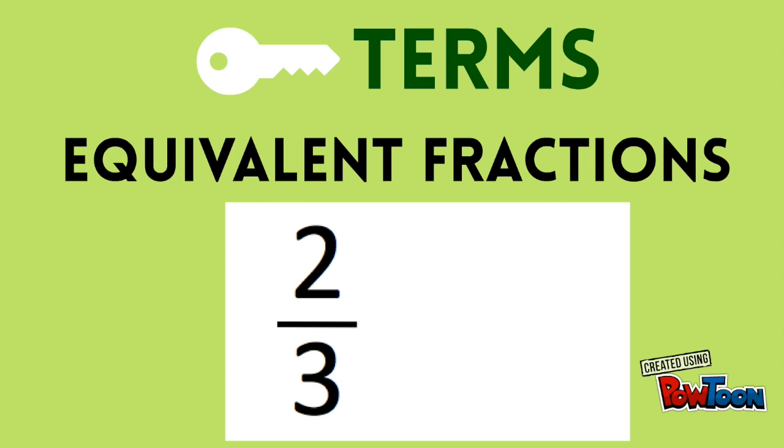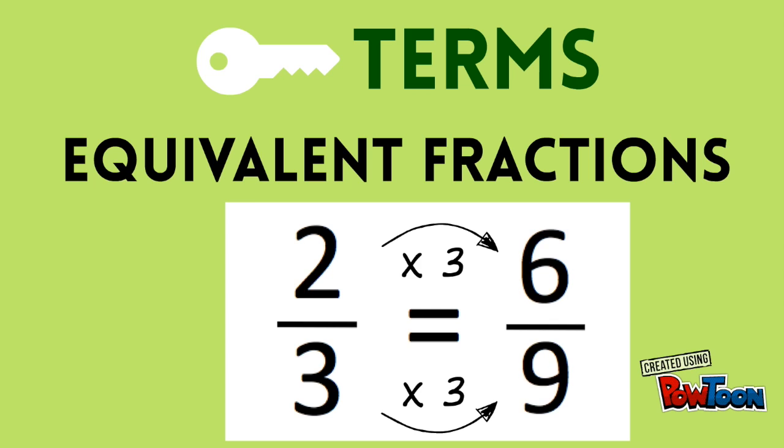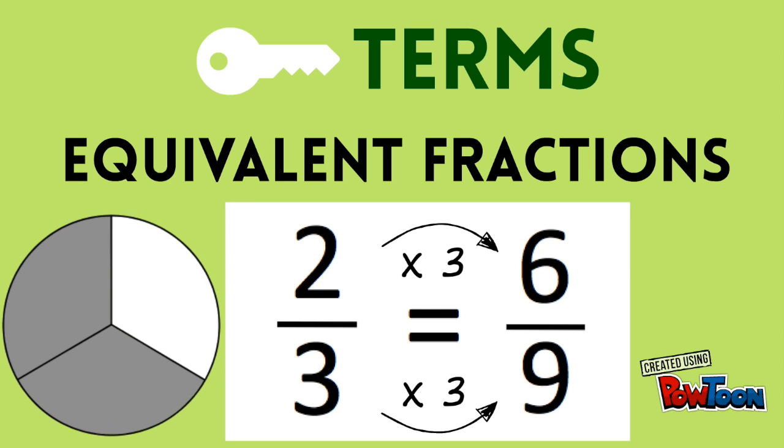We can change a fraction into an equivalent fraction by multiplying both the numerator and denominator by the same number. 2 thirds and 6 ninths are equivalent fractions because they both name the same part of a whole. Notice how the shaded part, or the fraction of the circle, doesn't change when I turn 2 thirds into 6 ninths.